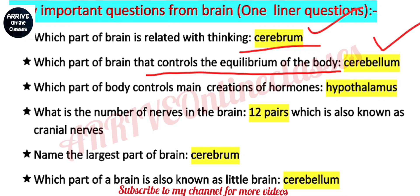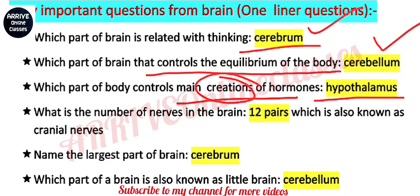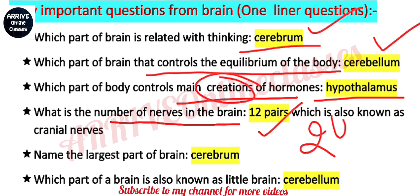Next question: which part of the body controls excretion of hormones? So the hypothalamus of the brain is responsible. Next: what is the number of nerves in the brain? So 12 pairs, means 24, which are also known as cranial nerves.